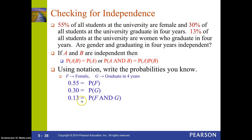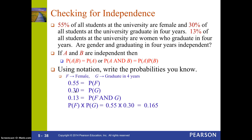To check for independence, I can use the rule: P(A and B) = P(A) × P(B) if they're independent. We know P(F and G) is 13%. So if I multiply the two probabilities together — P(F) × P(G) = 0.55 × 0.30 — that gives about 16.5%, which is NOT 13%.